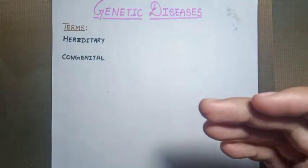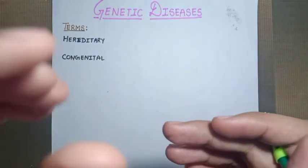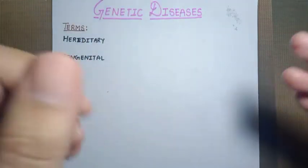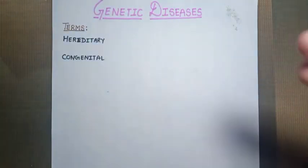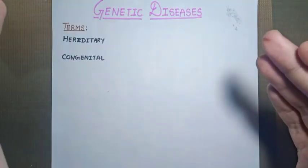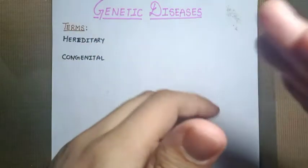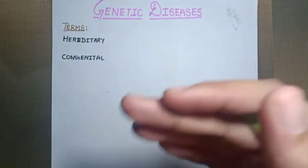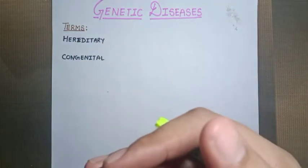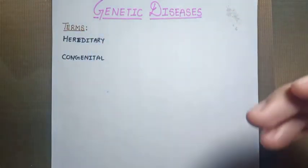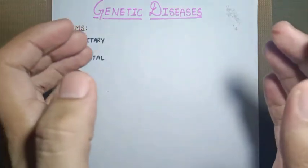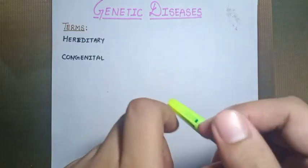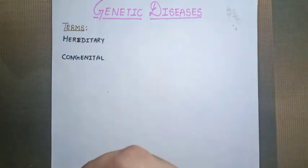Not all genetic diseases manifest in childhood or the early stages of life. Most pediatric diseases are of genetic origin, but not all. Some genetic diseases may or may not show symptoms in the early stages of life or at birth. That is why we are clubbing these two topics — genetic diseases and pediatric diseases — into one chapter.